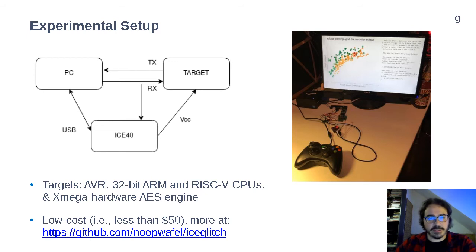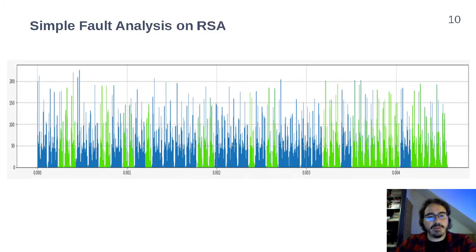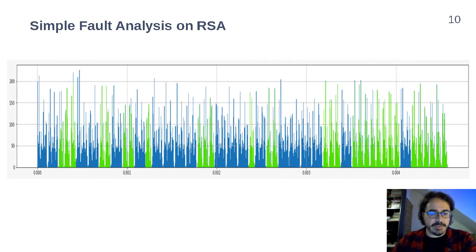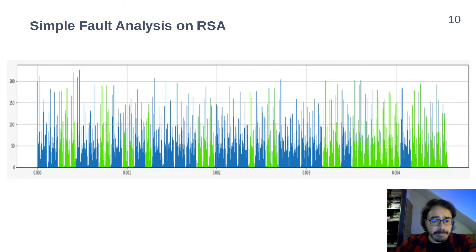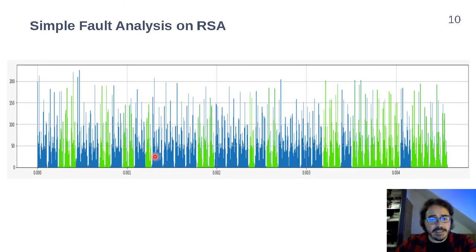Let us have a look at Simple Fault Analysis based on Simple Power Analysis on RSA. Here we have a characterization trace constructed in the way described in previous slides. This is a square-and-multiply implementation of RSA, and we can see that the patterns are different: the light green patterns correspond to processing zeros, and the dark blue patterns correspond to ones.